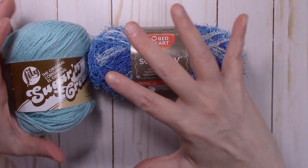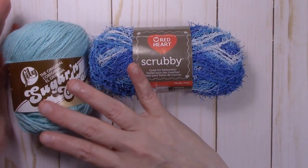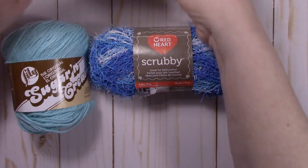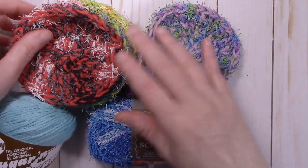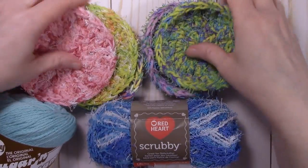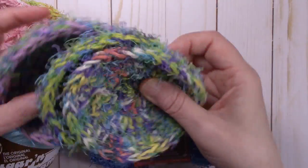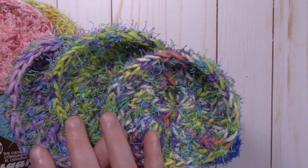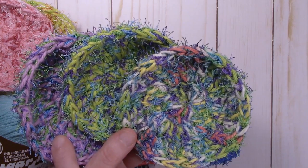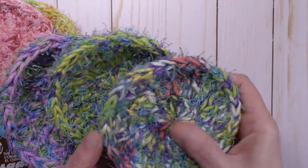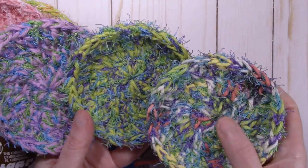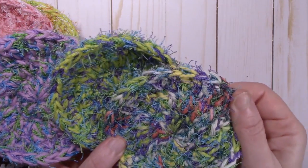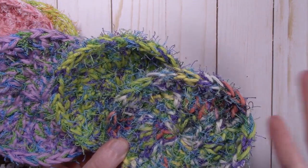Now, it doesn't matter what color scrubby yarn and what color cotton yarn that you use, you can mix and match. And I'll show you what I mean by bringing in my examples. Like, these three right here were all done using the same color scrubby yarn but different color cotton yarns, so you get a different look or color combination with each of them.